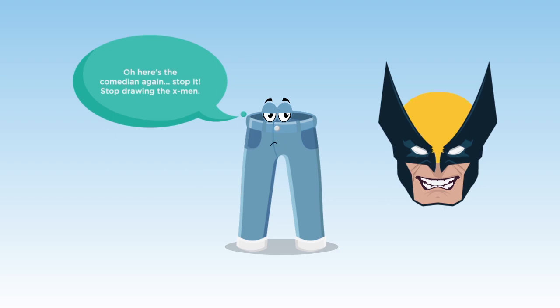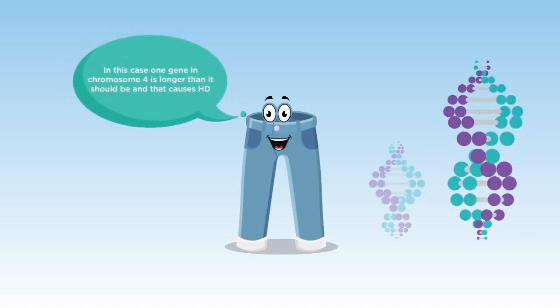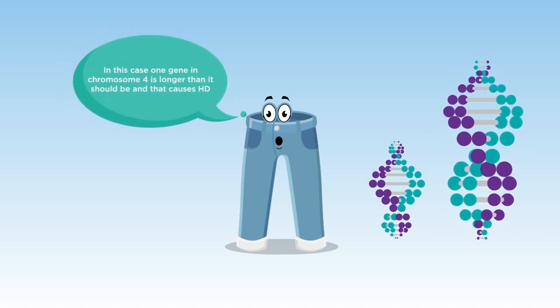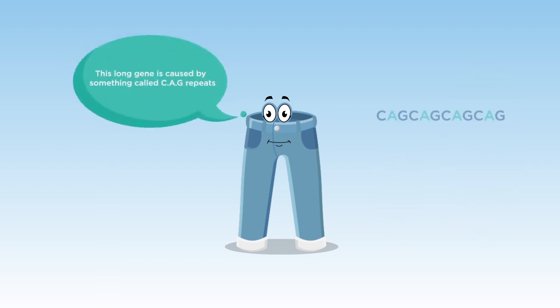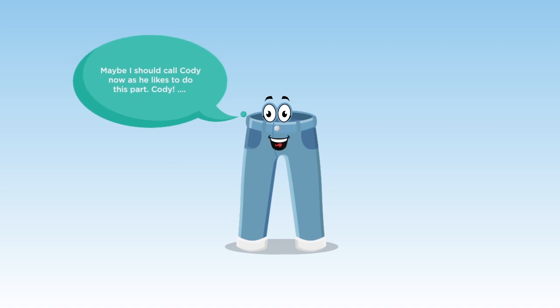Oh, here's the comedian again. Stop it. Stop drawing the X-Men. Mutation does not have to mean mutants. In this case, one gene on chromosome 4 is longer than it should be, and that causes HD. This long gene is caused by something called CAG repeats. Maybe I should call Cody now, as he likes to do this part. Cody?